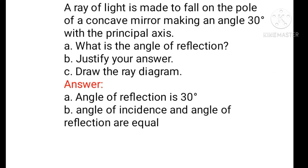The next question: a ray of light is made to fall on the pole of a concave mirror, making an angle of 30 degrees with the principal axis. What is the angle of reflection? The angle of incidence is equal to the angle of reflection. That rule means the angle of reflection is equal to 30 degrees.